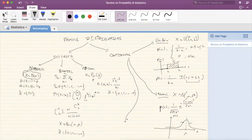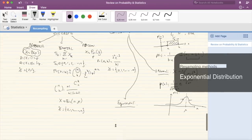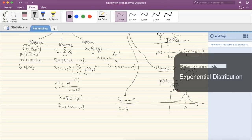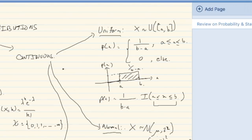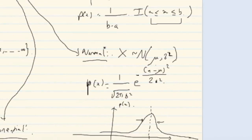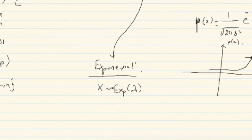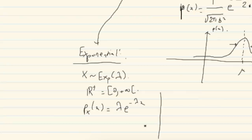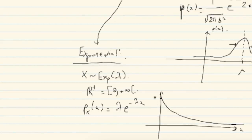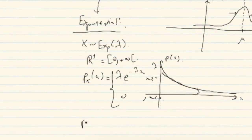The Exponential distribution is denoted X ~ Exp(lambda), taking values in R+ (the interval [0, infinity)). Its PDF is lambda * e^(-lambda*x), which decreases and can be written as lambda * e^(-lambda*x) * I(x > 0). The rate of decay depends on lambda — higher lambda means faster decay.